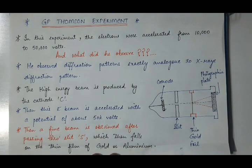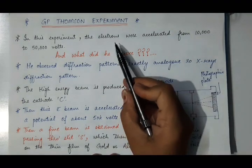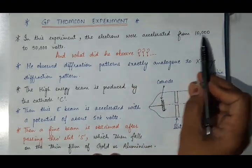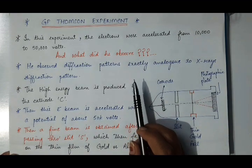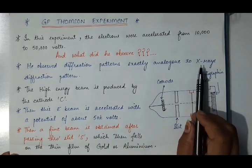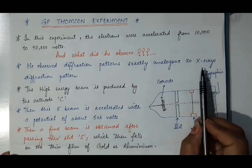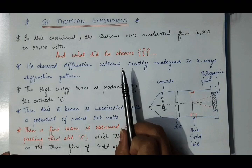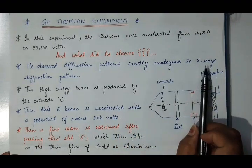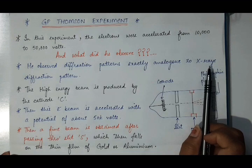In the GP Thomson experiment, Thomson accelerated electrons from 10,000 to 50,000 volts. After accelerating the electrons to such a high voltage, he observed a diffraction pattern which was exactly similar to that of the diffraction pattern of X-rays. We know that X-rays are waves, so if X-rays behave like waves and the diffraction pattern of electrons is exactly similar, therefore we can conclude that electrons also behave like waves.